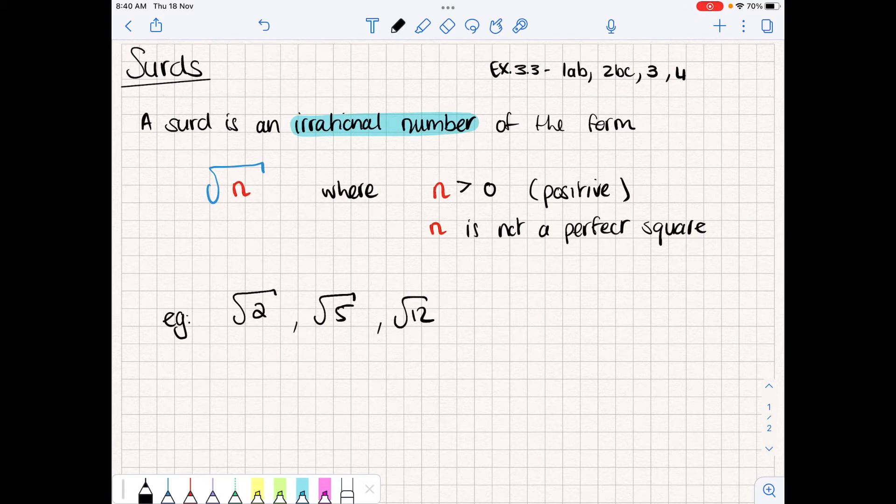Now, let's look at some examples of numbers that are not square roots or not surds. Let's take the square root of 9. The square root of 9 isn't a surd because the square root of 9 gives us a whole rational number of 3, and so it's not considered a surd.